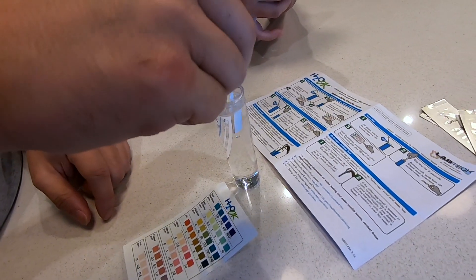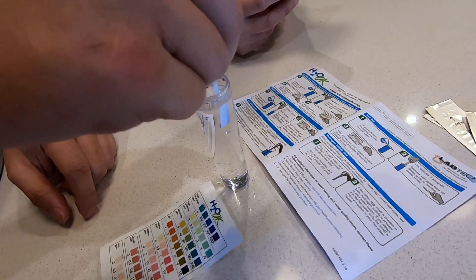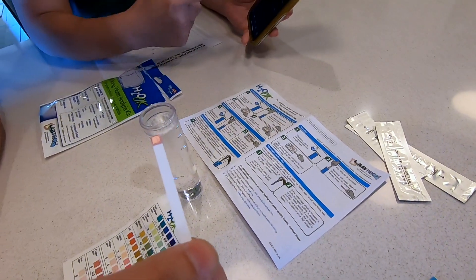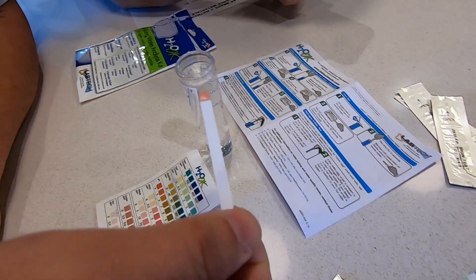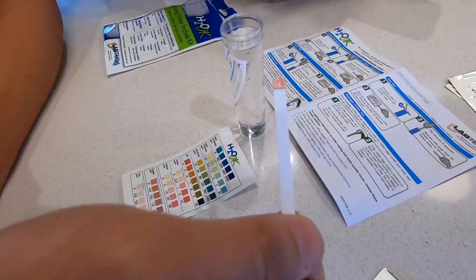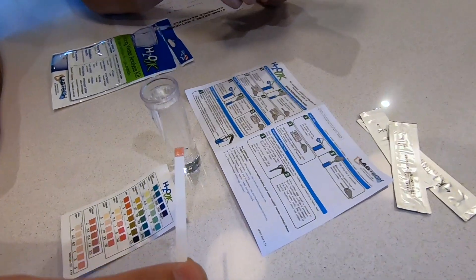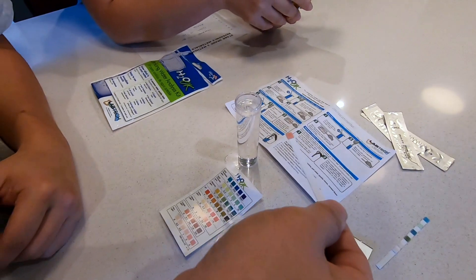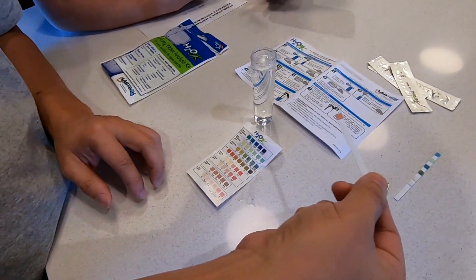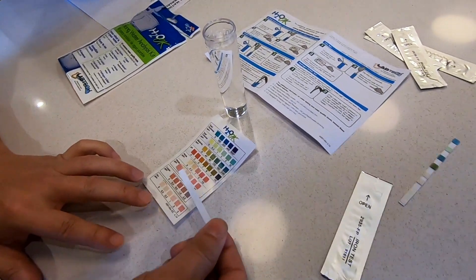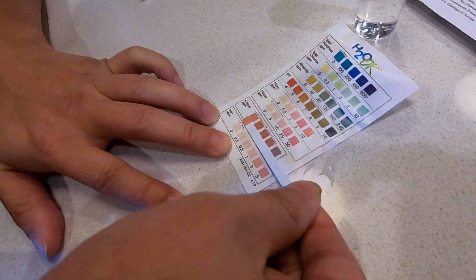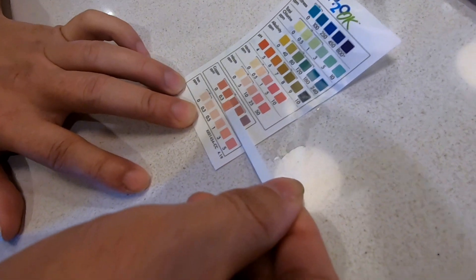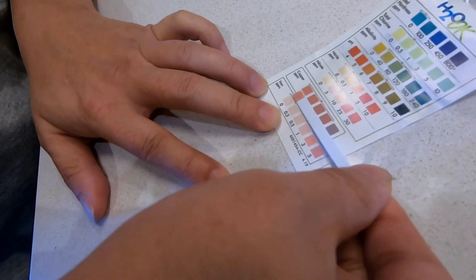So dip it, swirl. One, two, three, four, five, six, seven, eight, nine, ten. Remove it, wait 15 seconds. One, two, three, four, five, six, seven, eight, nine, ten, eleven, twelve, thirteen, fourteen, fifteen. This is no good after 30 seconds so we're gonna have to measure it really quick. I think this is it right here, so it's the first one. It matches more like the first one here which is zero.